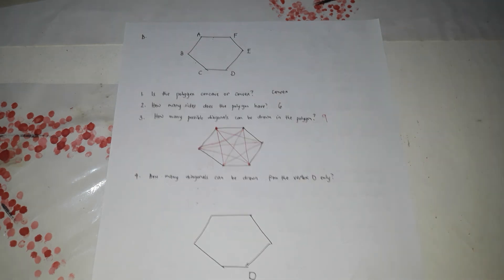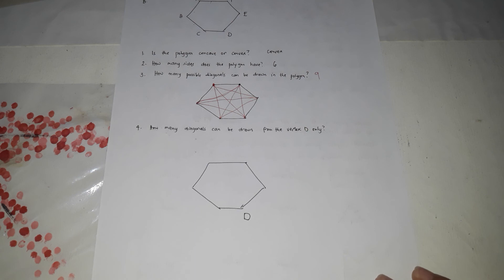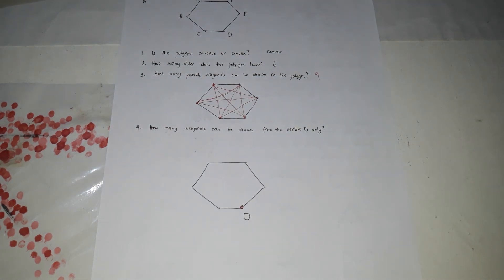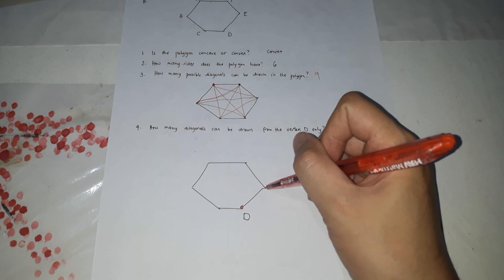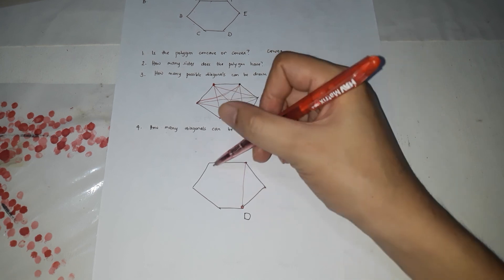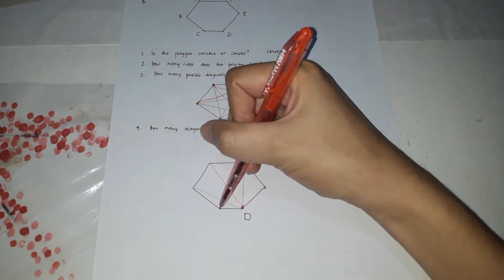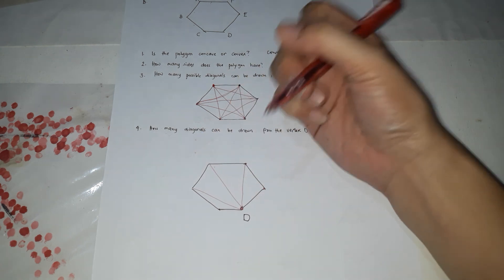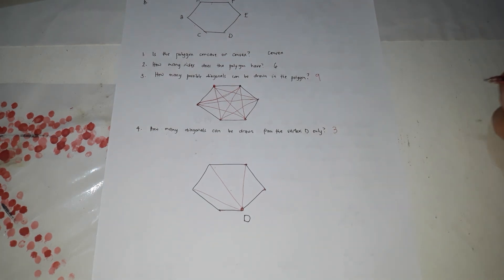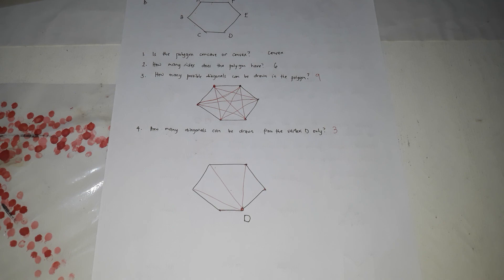How many diagonals can be drawn from vertex D? You cannot draw a diagonal from D to its consecutive vertices because those are sides, not diagonals. From vertex D, the diagonals go to the non-consecutive vertices: one, two, three. So there are only three diagonals that can be drawn from vertex D. That is how polygons work — that is polygon and its classifications. Thank you.